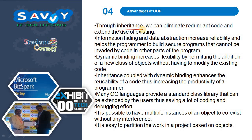Data abstraction helps build secure programs that cannot be invaded by code in other parts of the program. Dynamic binding increases flexibility by permitting the addition of a new class of objects without having to modify existing code. Inheritance coupled with dynamic binding enhances the reusability of code, increasing programmer productivity. Many object oriented languages also provide a standard class library that can be extended by users, saving a lot of coding and debugging effort.